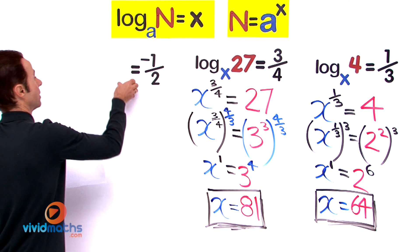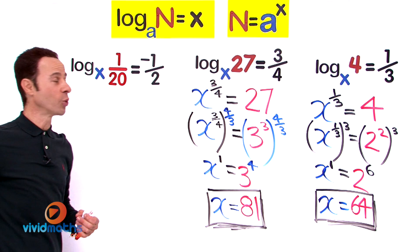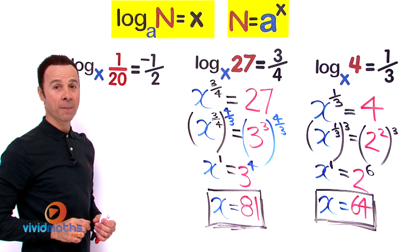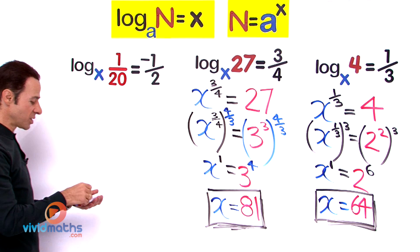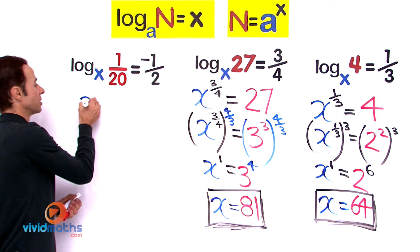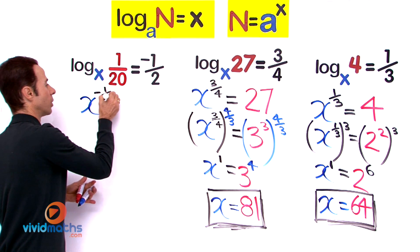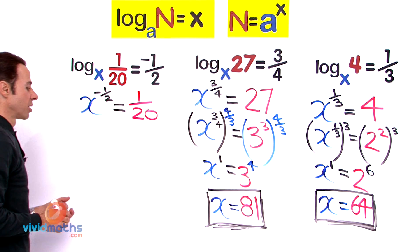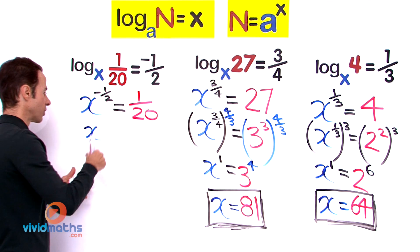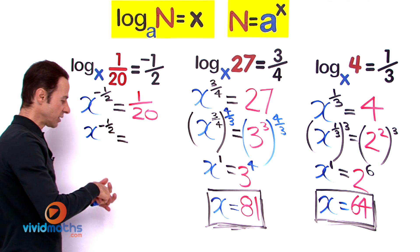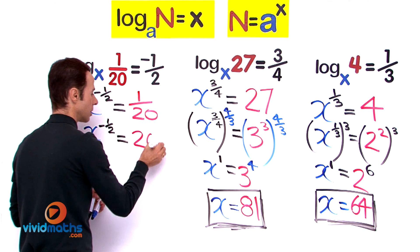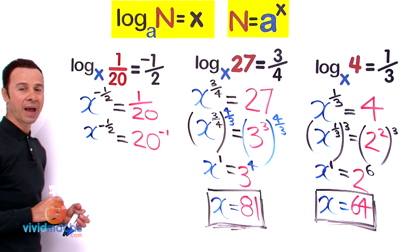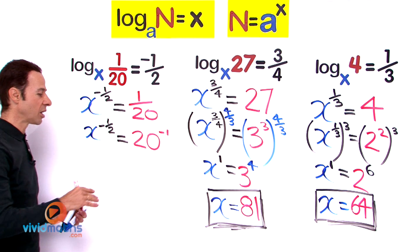Let's try one more example where the exponent is a negative fraction — this adds a twist. We have log base x of 1/20 equals negative 1 half. First, let's convert to exponent form: x to the power of negative 1 half equals 1 over 20. Now, 1 over 20 is the same as 20 to the power of negative 1, so those are equivalent.